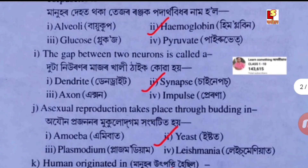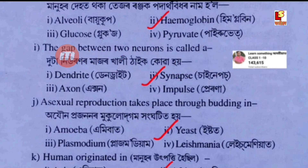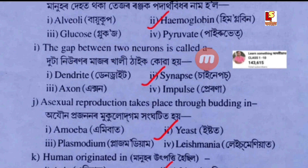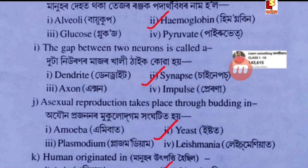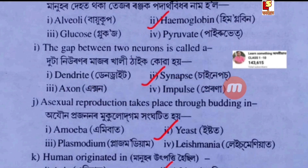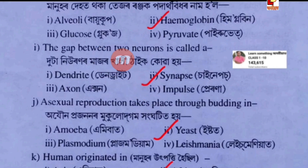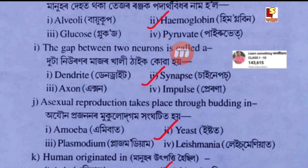Why is the gap between two neurons called a — Option A: dendrite. Option B: synapse. Option C: axon. Option D: impulse. The gap between two neurons is called a synapse.